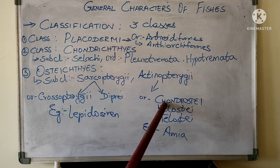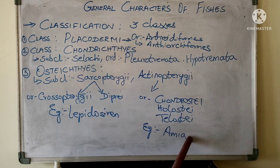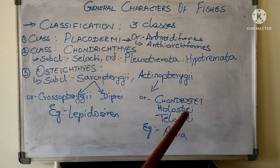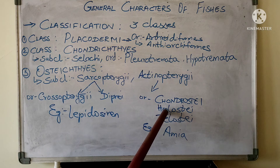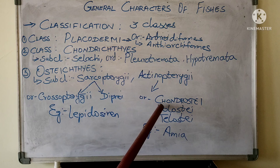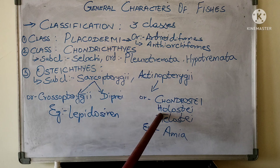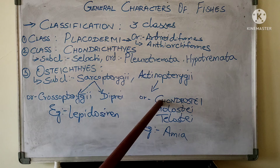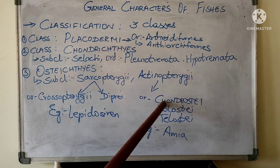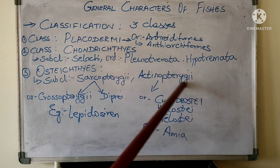In Chondrostei, the mouth is large, the body is covered by ganoid scales, the tail fin is heterocercal, a lobed pectoral fin is present, and the body has five rows of bony scutes. In Holostei, the mouth is small, a heterocercal tail fin is present, and the skin is covered with cycloid scales. An example is the Amia fish. In Teleostei, a snout is present which is round in nature, and scales are arranged in oblique rows.